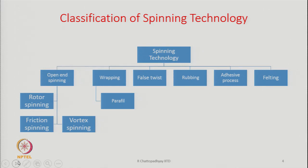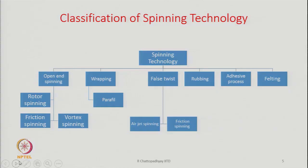We will learn about them in detail later on. In parafil spinning, a filament is wrapped around a bundle of fibers. Under the false twist principle, there are two methods which are available: air jet spinning and also friction spinning. So you can see that friction spinning appears here under open end and also under false twist spinning system. As we go through the course, we will learn why friction spinning exists under the open end spinning system and also under the false twist spinning system.